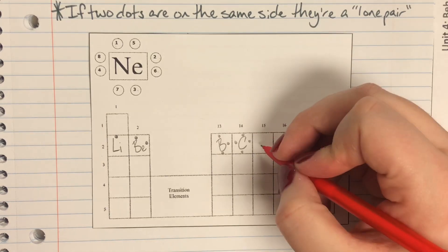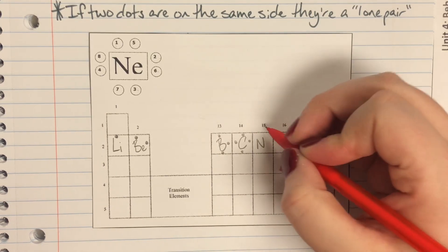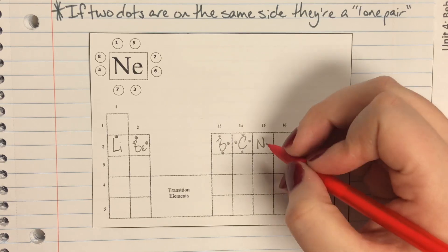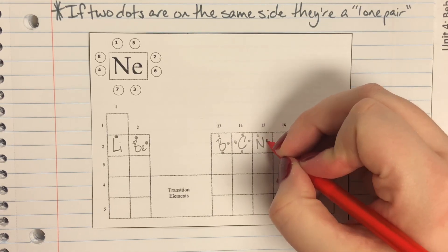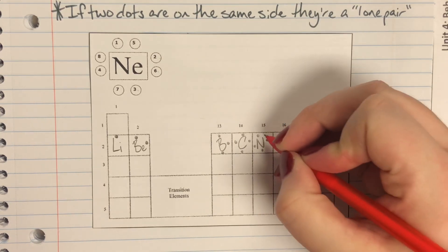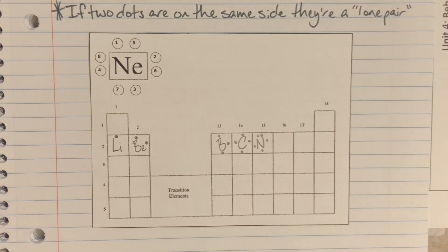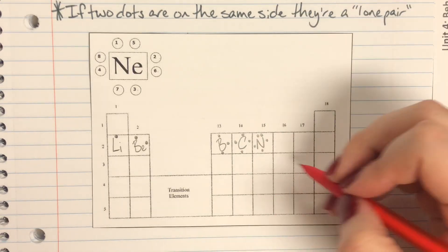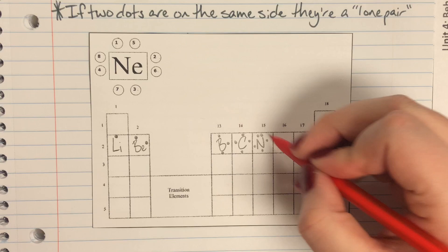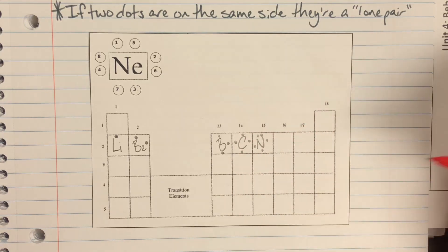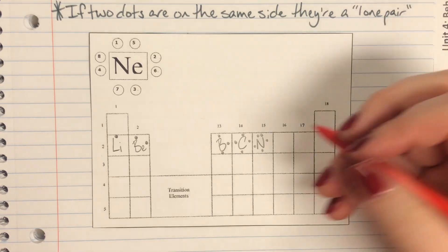So after carbon I will have nitrogen. Nitrogen will be in column five so I will have one, two, three, four, five dots for nitrogen. Fill order is important; make sure that you're going in a clockwise direction and you're trying to minimize the number of lone pairs that you do end up having.